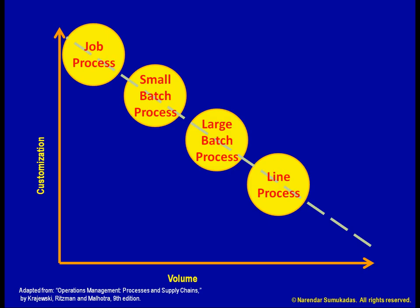As we move down to the extreme end of the diagonal, we are still talking about a process where we are doing the same thing over and over. But here we can think of a process so linear that, literally, we are talking about a liquid flowing through a pipe. We call this a continuous process.